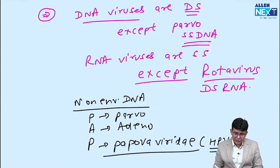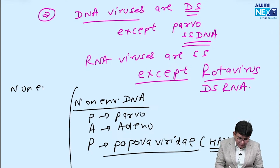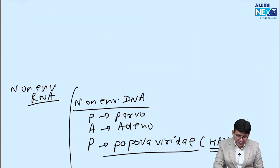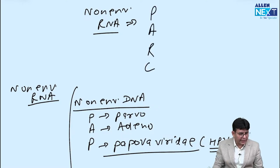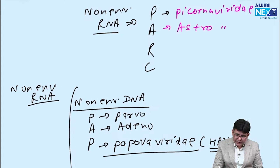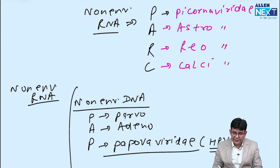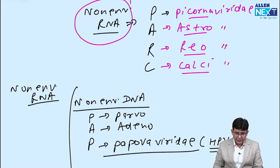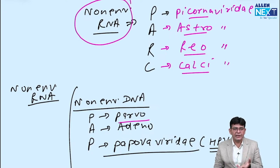Now for non-enveloped RNA viruses, use the mnemonic PARK. These are all families: Picornaviridae, Astroviridae, Reoviridae, and Calciviridae. So remember: Picornaviridae, Astroviridae, Reoviridae, and Calciviridae are all non-enveloped RNA viruses.